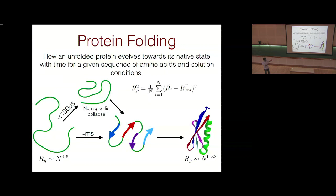The important denaturants used are urea and guanidinium. If you take a protein in a random coil at high denaturant concentration and dilute it to close to zero molar, the protein is now in an environment conducive for it to go to the folded state. The question is: what happens to the protein dimensions in the first hundred microseconds? This is called the burst phase of folding.